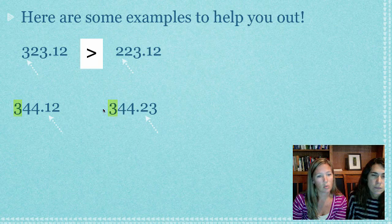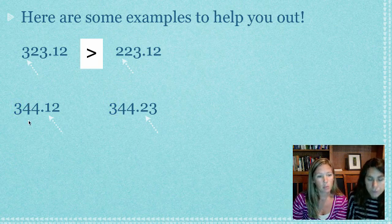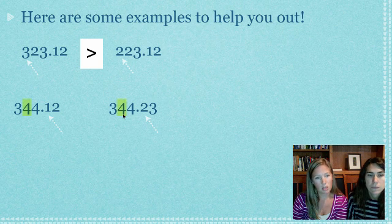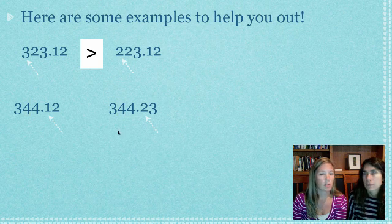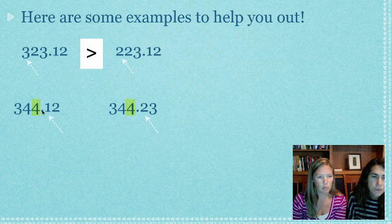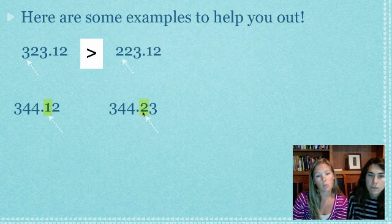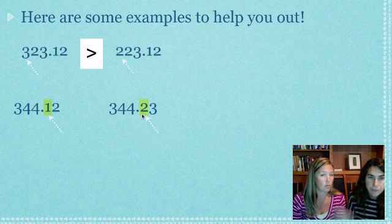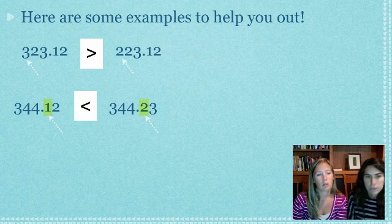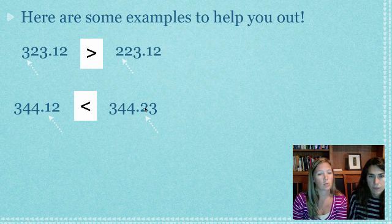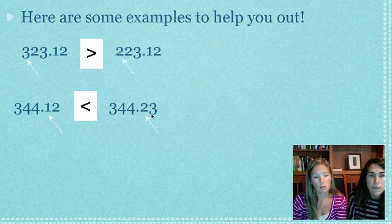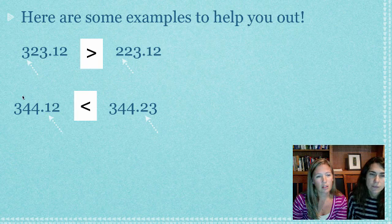If you have a number that starts like these ones start with three, both of them have 300, you have to move on to the next place value. We move on to the fours, still the same. Move on to the ones place, still the same. Decimal, move on over to the tenths. In this case, we finally have something different. This one we have a one, this one we have a two. Which number is bigger? Two. So 344.23 is larger.